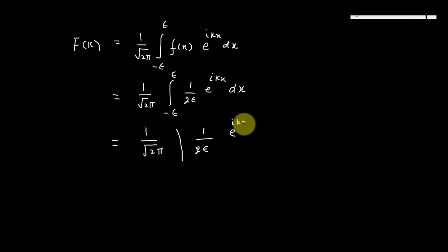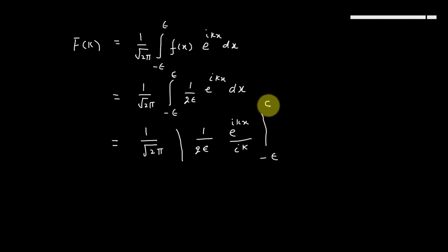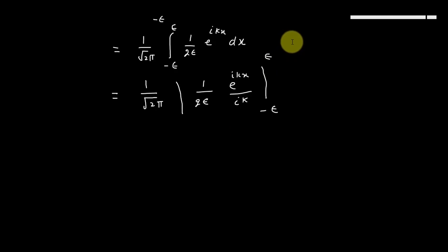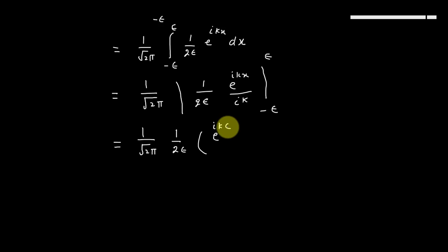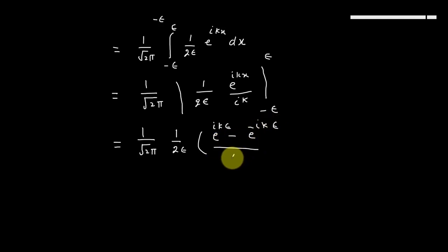...divided by (iK), and limits are from minus epsilon to plus epsilon. اب دوستو یہاں پہ میں نے limits put کرنا ہے، تو we will get 1/√(2π) × 1/(2ε) × [e^(iKε) − e^(−iKε)] / (iK).